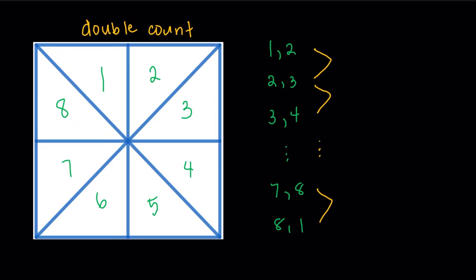So in fact, under the one, two and the two, three case, we have repeated the one, two, three triple. Under the two, three and the three, four, we repeated the two, three, four, all the way until seven, eight and eight, one. We're going to repeat the seven, eight, one triple. And there's actually one more: one, two and eight, one, these two give us an eight, one, two triple that we have to exclude.